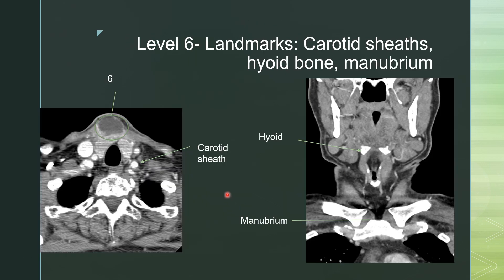Level 6 lymph nodes are considered the central compartment. They should be anterior to the carotids, below the hyoid bone, and superior to the manubrium — a very anterior central compartment. This is usually where you see lymph node metastases from thyroid cancer.